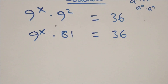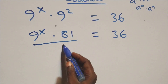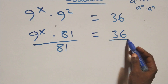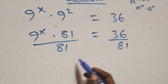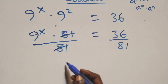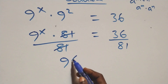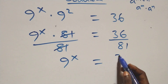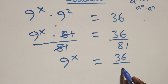We divide this side by 81 and also divide this side by 81. On this side, the 81s cancel each other, leaving 9 raised to power x, which is equal to 36 over 81.